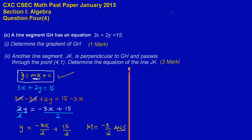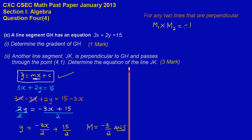For any two lines that are perpendicular, the gradient of the first line — m subscript 1 — multiplied by the gradient of the second line — m subscript 2 — is equal to negative 1. So that's the formula to work out the gradient for a line that is perpendicular to another.